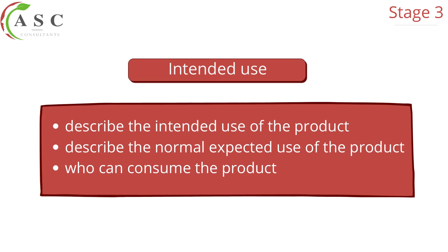In stage three you must identify the intended use of the product. Here you describe the normal expected use of the product as well as who can consume it. For example, with citrus fruit, some people peel an orange and eat what is inside, but when baking or making gin, people can use the peels as zest or place them in gin to add flavor and enhance the drink — normally gin or cocktails. That is what we mean by intended use.